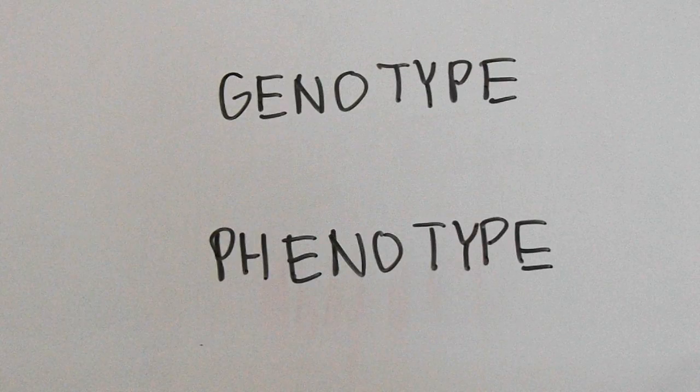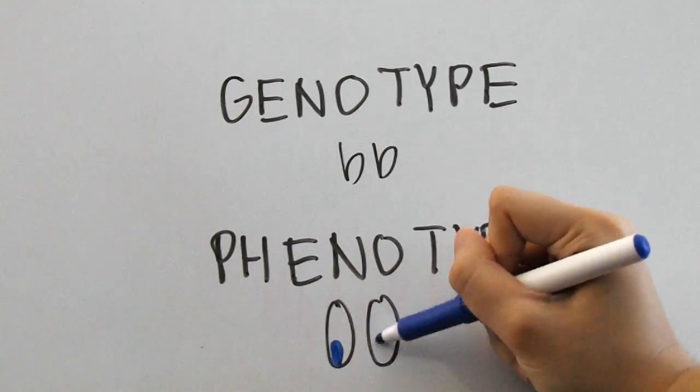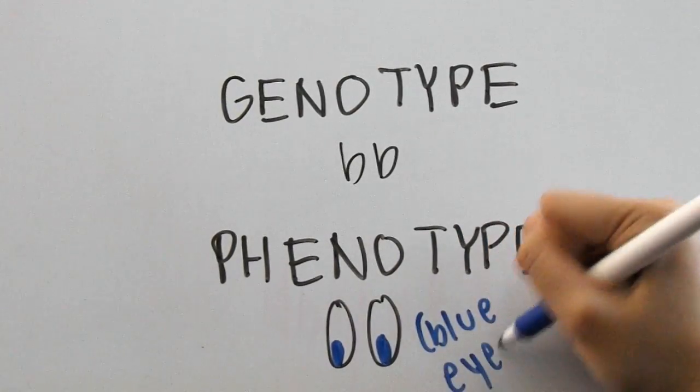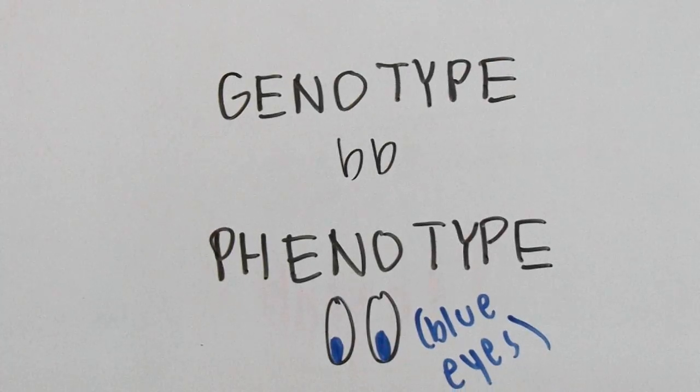One very important thing that you will also need to know is the difference between genotype and phenotype. Genotype describes the genetic makeup of an organism, while phenotype describes how the organism actually looks.